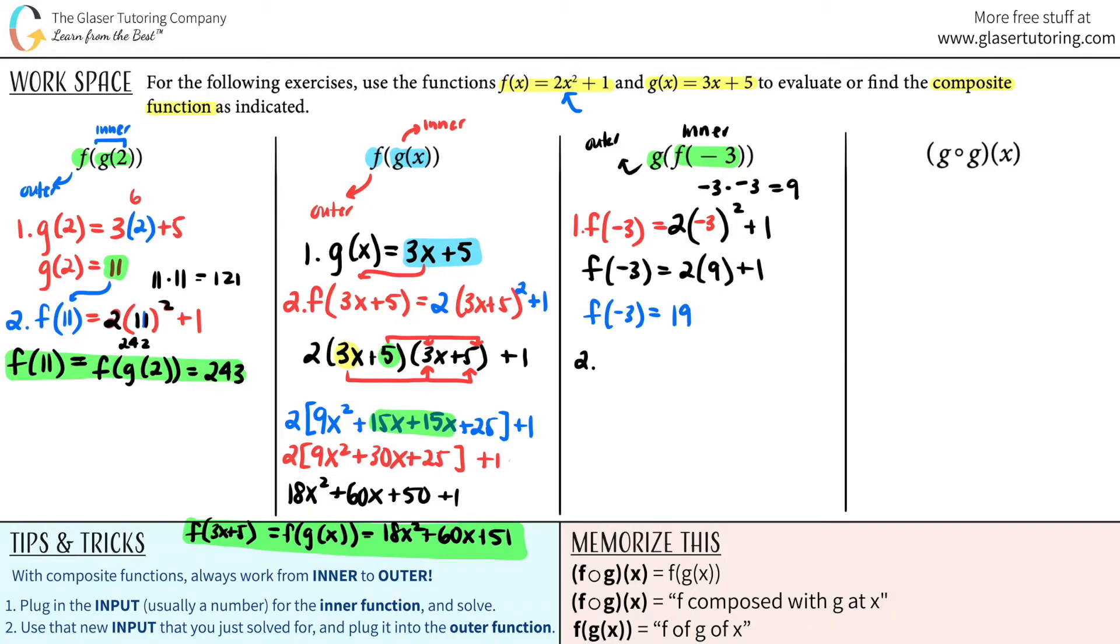So now I just got to take the 19 and use it for my outer function, which was the g function. So g of 19. This goes in for here. And now I look at my g function. Wherever there is an x value, I will plug in a 19. So we got 3 times 19 and then plus 5. You can plug this all into your calculator. 3 times 19. 57. 57 plus 5 is 62. So g of 19 equals 62. And this is the same thing as saying g of f of negative 3, which equals 62.